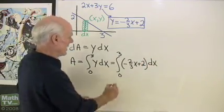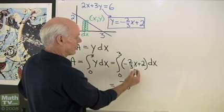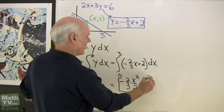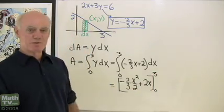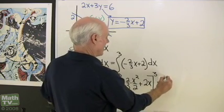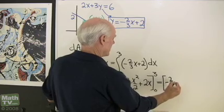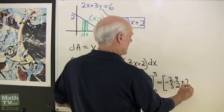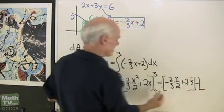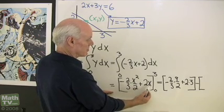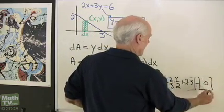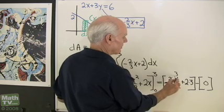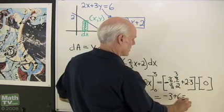That's pretty easy to integrate. I get negative 2 thirds times x squared over 2, plus 2x, and I evaluate that between 0 and 3. When I substitute 3 in for x, I end up with negative 2 thirds times 9 halves, plus 2 times 3 which is 6. When I substitute 0 in for x, both terms are 0. So: 3 divides into 9 three times, the 2s cancel, leaving negative 3 plus 6, which equals 3.